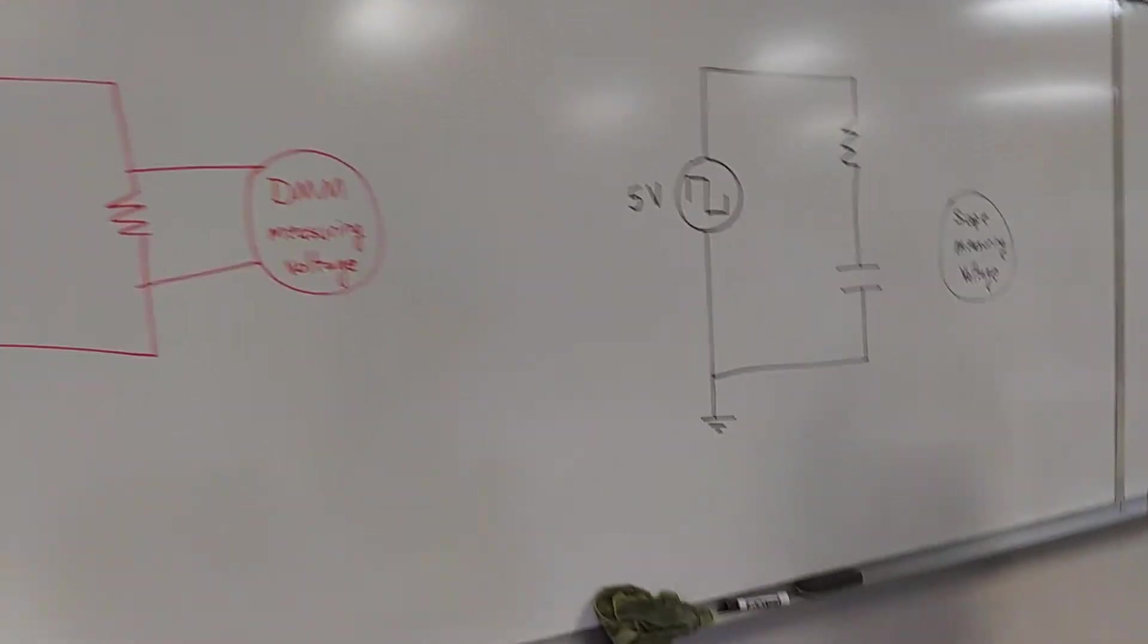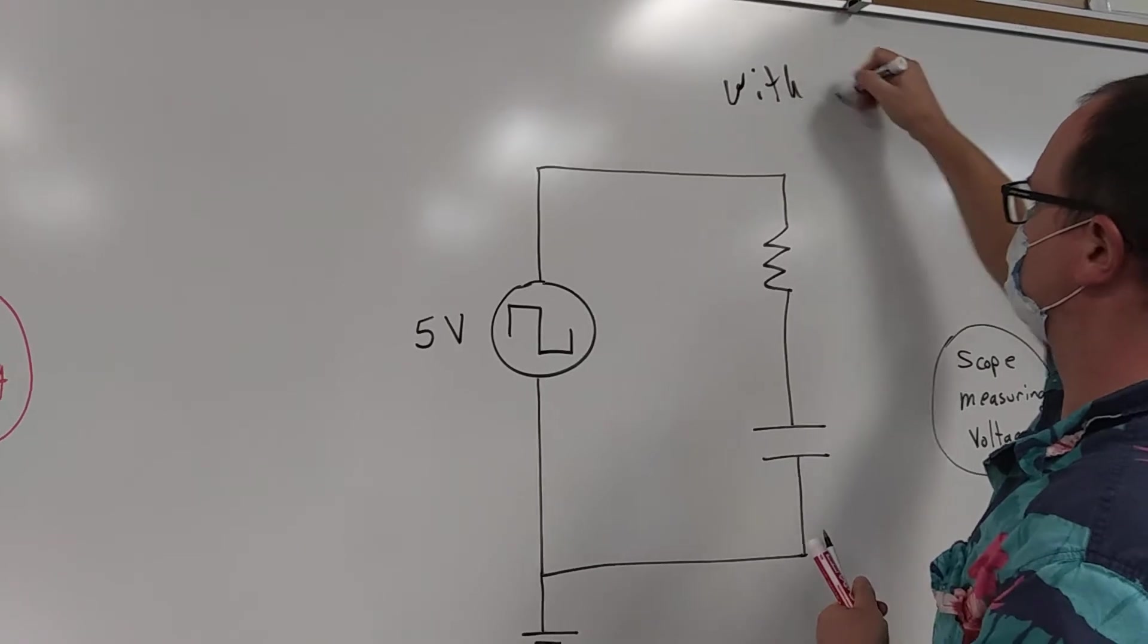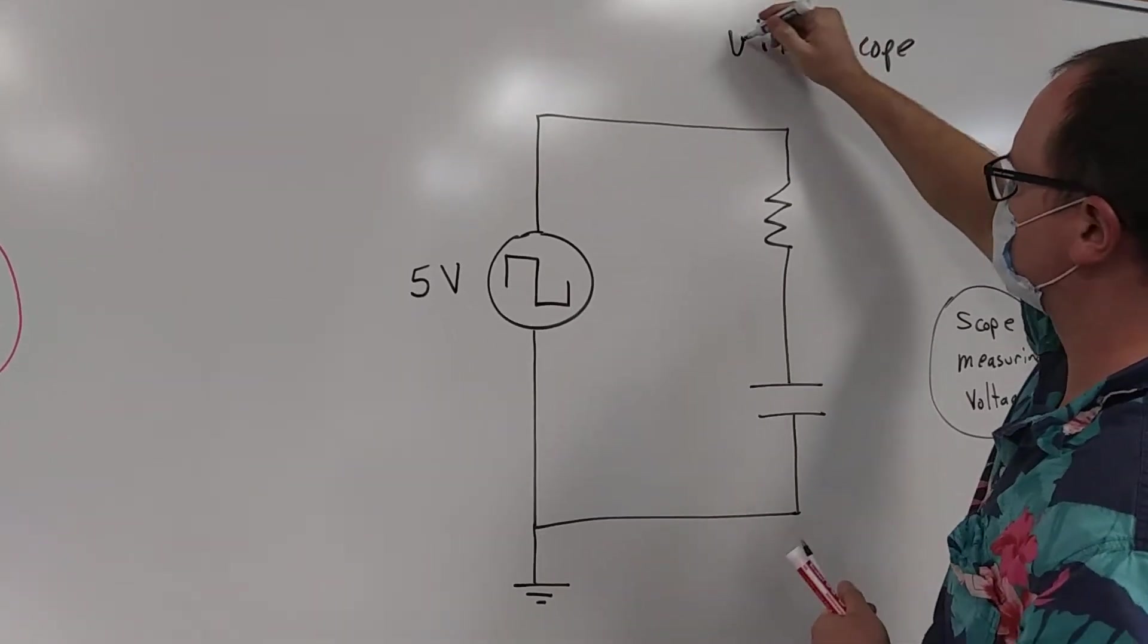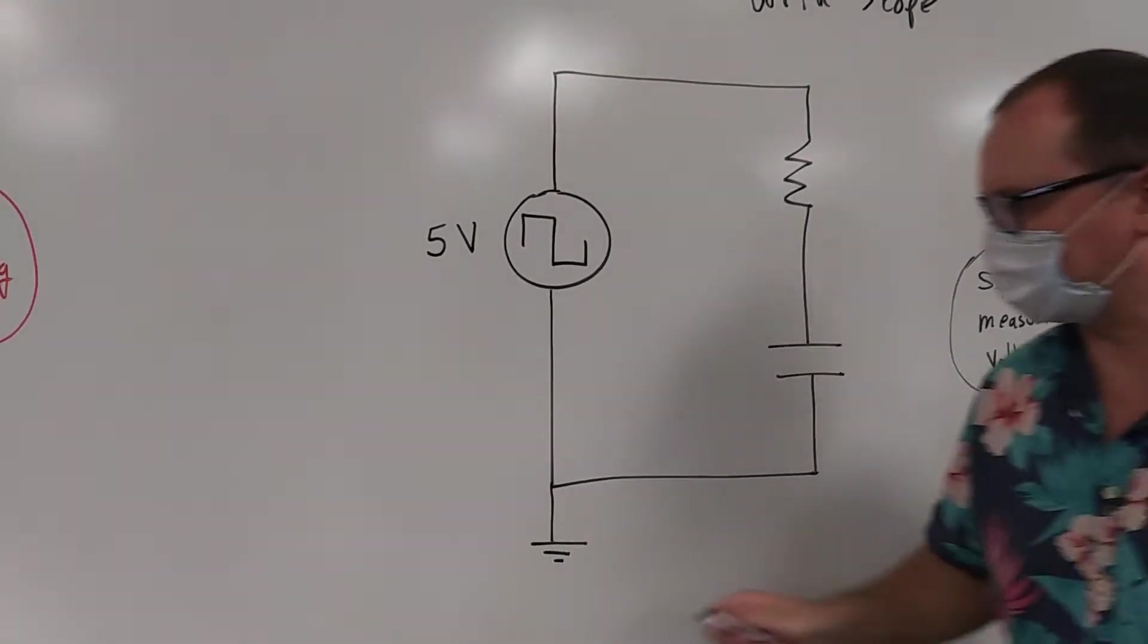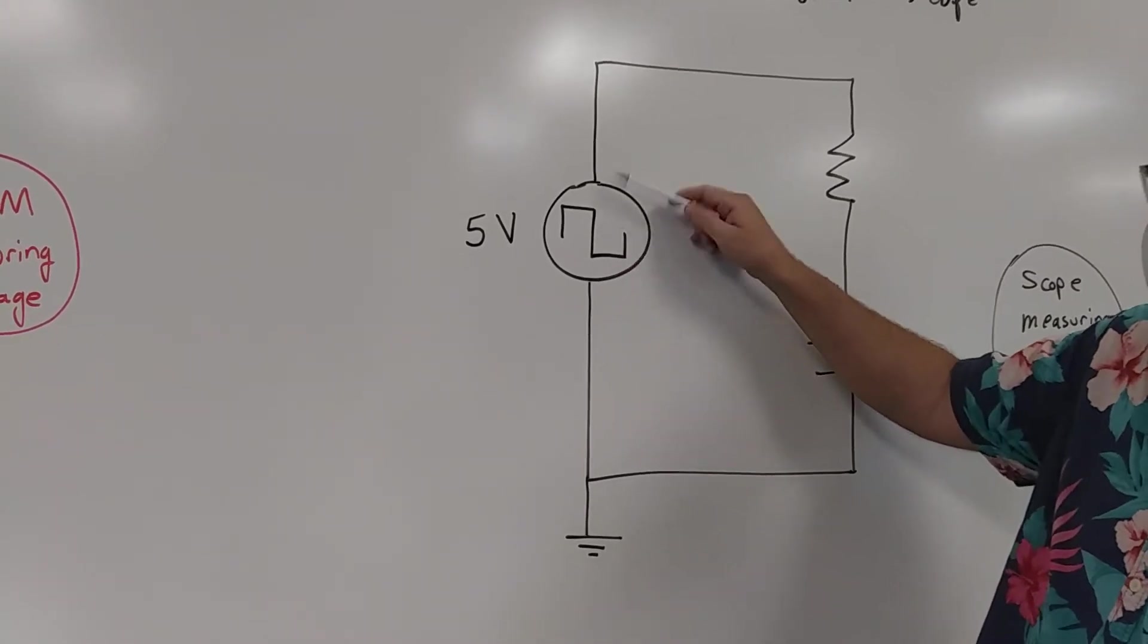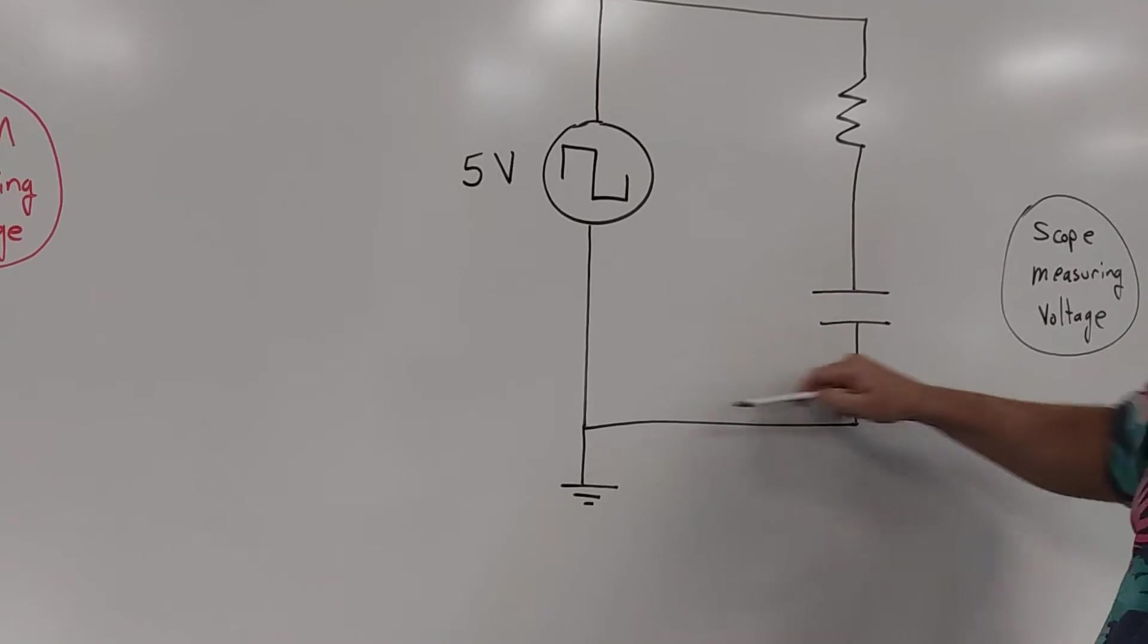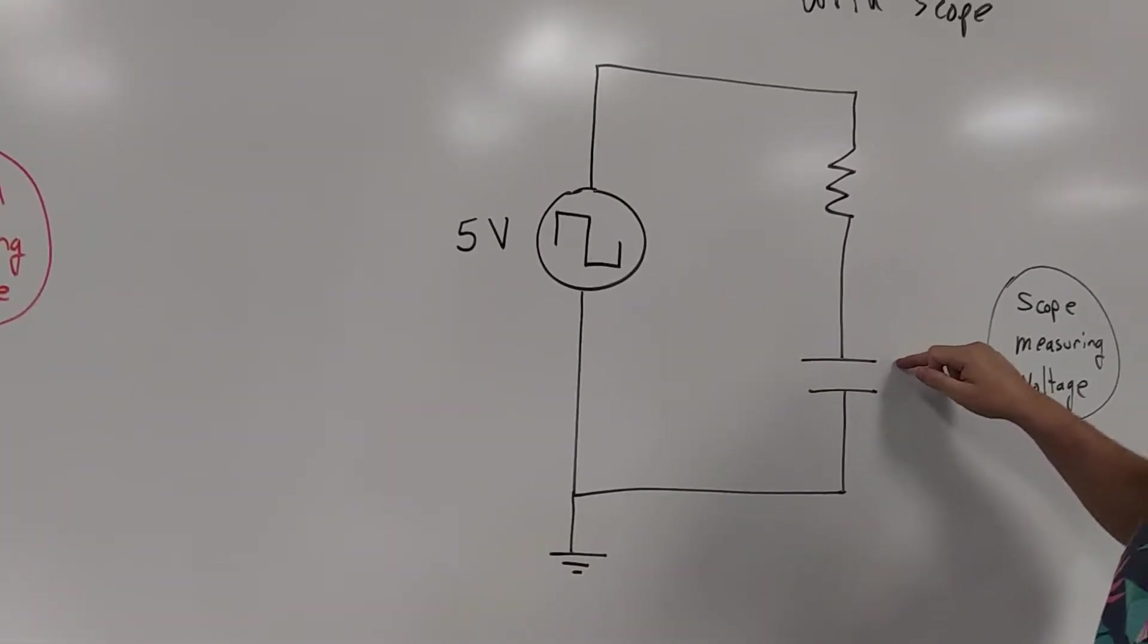Now let's go over here and this is with the scope. If we're going to do this measurement with the scope it looks a little bit different. Now we're oscillating between zero volts and five volts with this square wave. So now we see we actually have the same circuit even though it's going to look a little bit different. The resistor and capacitor are in series with each other.